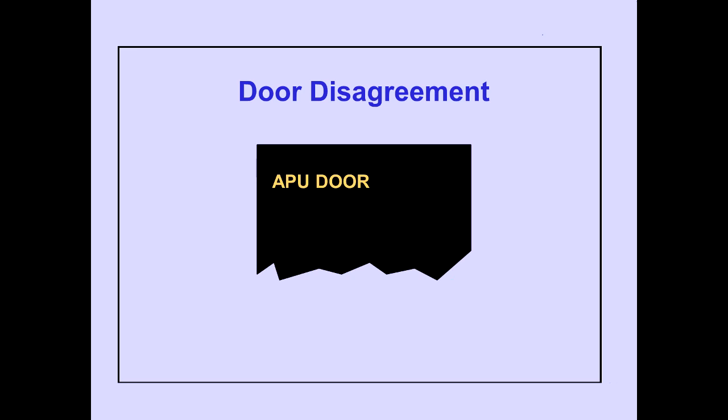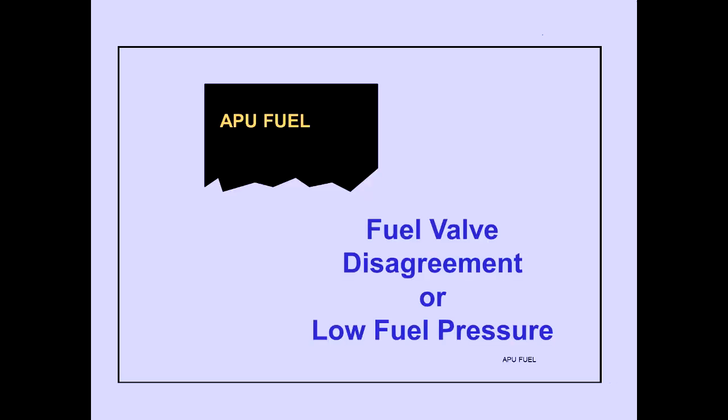The EICAS advisory message, APU door, is displayed when the APU door position disagrees with the commanded position. The EICAS advisory message, APU fuel, is displayed when the position of the APU fuel valve disagrees with commanded position, or when APU fuel pump pressure is low with the fuel pump commanded to run.